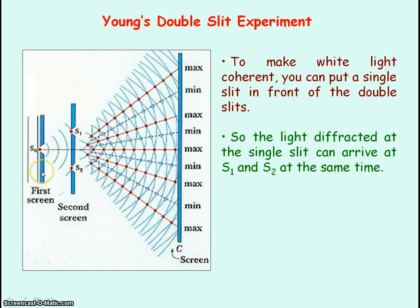If he didn't have the single slit, because of the randomness of the light being emitted, the light arriving at S1 and S2 would not have a fixed phase relationship and so would not be coherent, and we would not observe an interference pattern. The single slit made the light from the two double slits coherent, producing an interference pattern of bright and dark fringes observed on a screen placed beyond the slits.